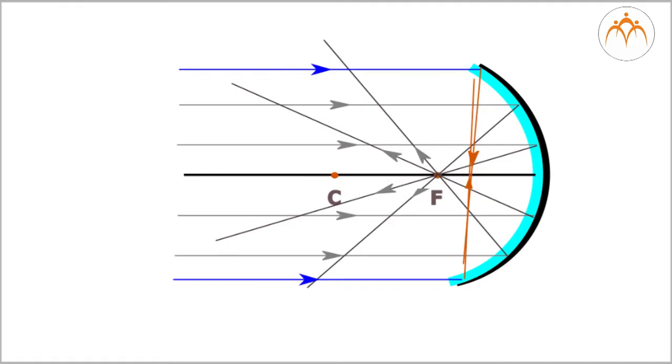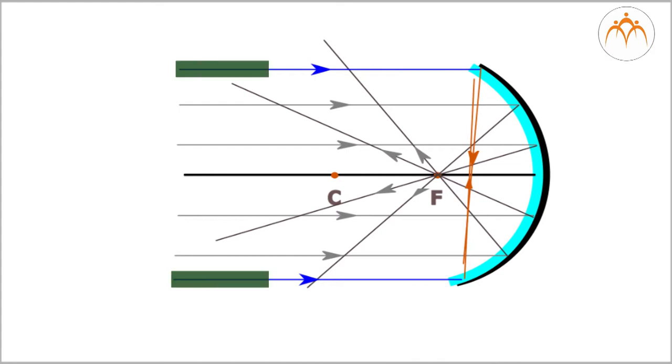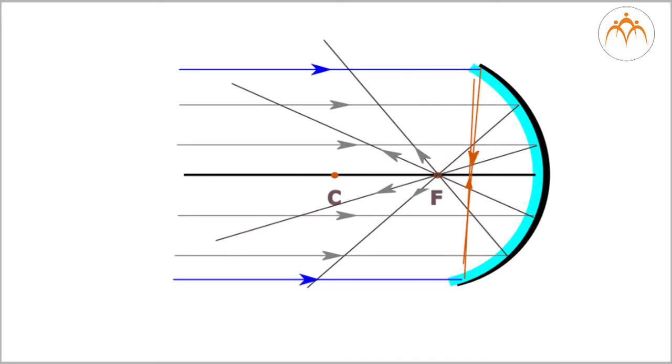The diagram shows six incident rays traveling parallel to the principal axis and reflecting off a concave mirror. The six corresponding reflected rays are also shown. In the diagram we can observe a departure from the expected or proper course. The two incident rays that strike the outer edges, which are top and bottom of the concave mirror, fail to pass through the focal point.